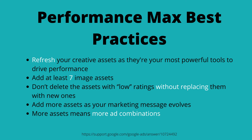Here are some specific best practices according to Google with Performance Max campaigns. Number one, refresh your creative assets as they're your most powerful tools to drive performance. Add at least seven image assets — this is because Performance Max is based heavily off of machine learning and AI, so the more assets you give it, the more combinations it can have to see what can truly drive the best results for your business. Don't delete assets with low ratings without replacing them with something new. Add more assets as your marketing message evolves. More assets equals more ad combinations for the system to select the assets that could drive the most conversions for you.